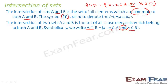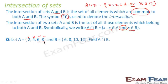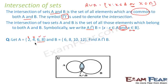Let's take an example where set A = {2, 4, 6, 8} and set B = {6, 8, 10, 12}. To find A intersection B, we find the common elements: Is 2 common? No. Is 4 common? No. Is 6 common? Yes. Is 8 common? Yes. So the only two common elements are 6 and 8, therefore A intersection B = {6, 8}.